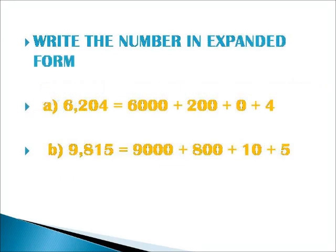Here, we have another method. Write the number in expanded form. The first sum is 6204. It can be written as 6000 plus 200 plus 0 plus 4. And the second sum is 9815. This can be written as 9000 plus 800 plus 10 plus 5.